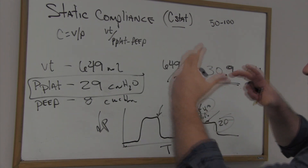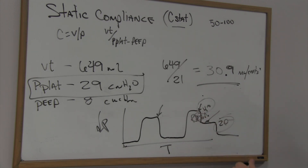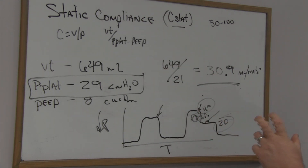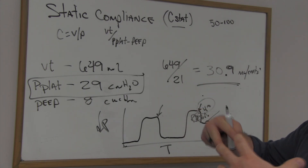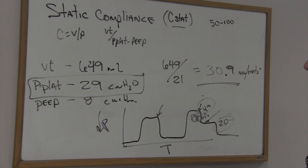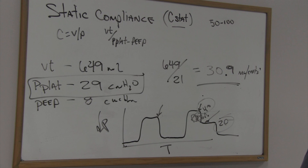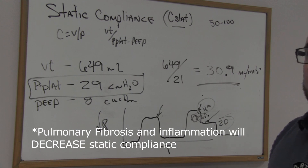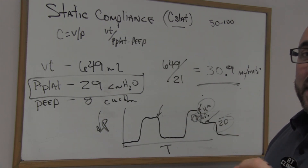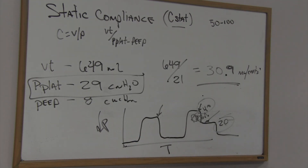A lot of resistance means there's something happening between the static state and full inflation — it can be many different issues. Static compliance is affected by obesity, prone positioning, extra-thoracic issues like burns creating extra pressure on the chest cavity, and inflammation causing airways to swell. Pulmonary fibrosis is also a big disease process that will increase static compliance right away because those airways are less likely to flex.